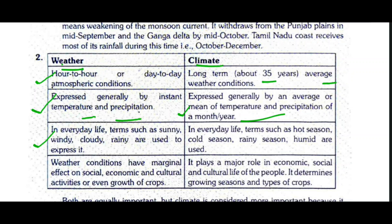In everyday life, terms such as sunny, windy, cloudy, and rainy are used to express weather. For climate, terms such as hot season, cold season, rainy season, and humid are used. Weather conditions have a marginal effect on social, economic, and cultural activities and crop growth. Climate plays a major role in the economic, social, and cultural life of the people and determines growing seasons and types of crops.